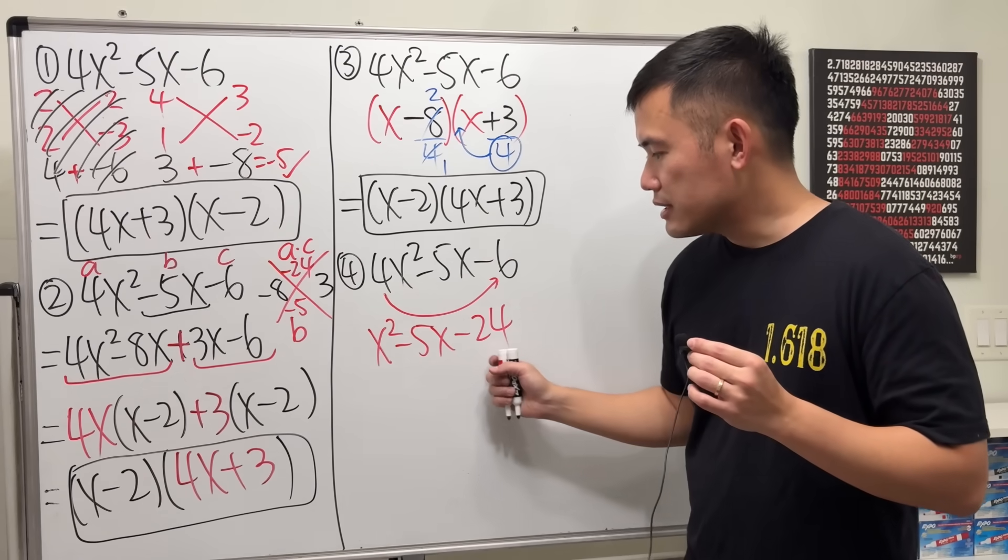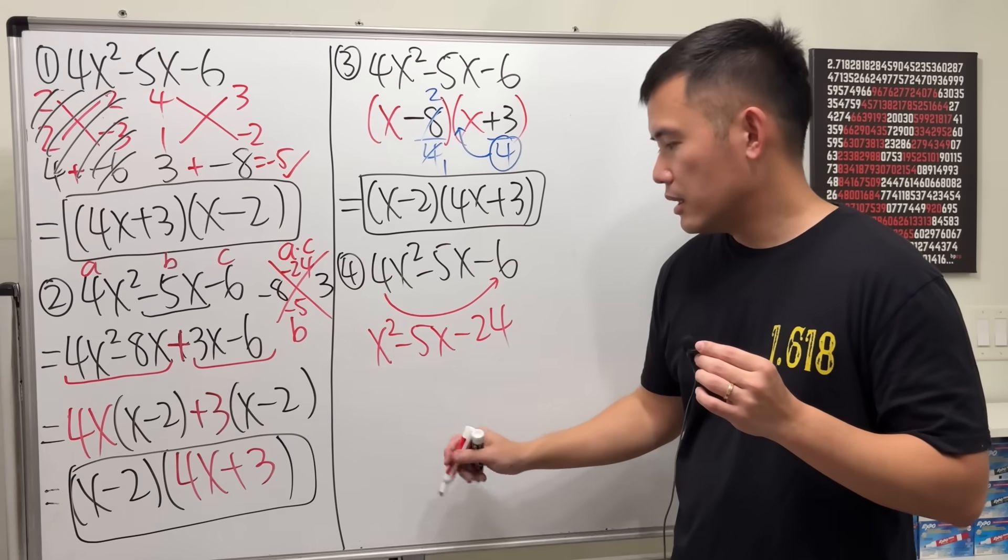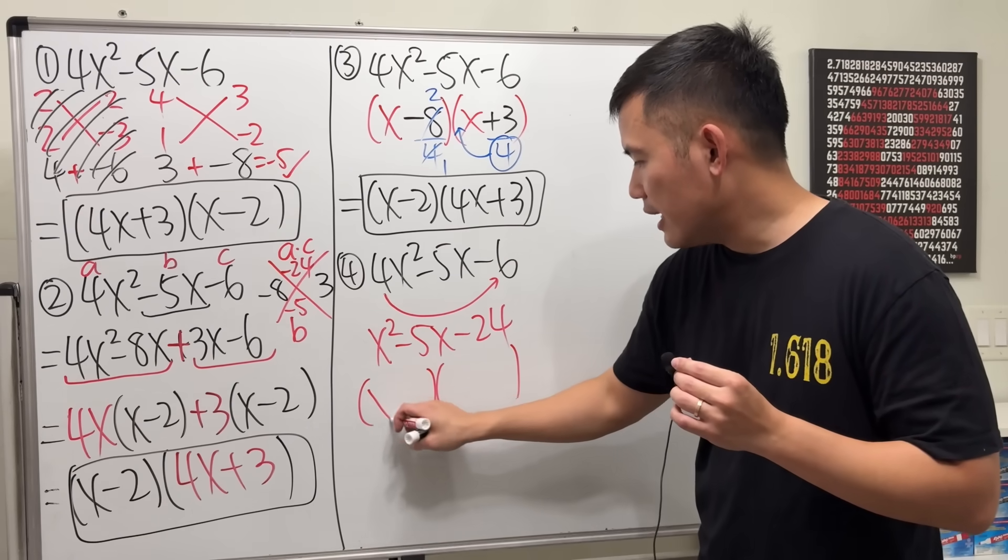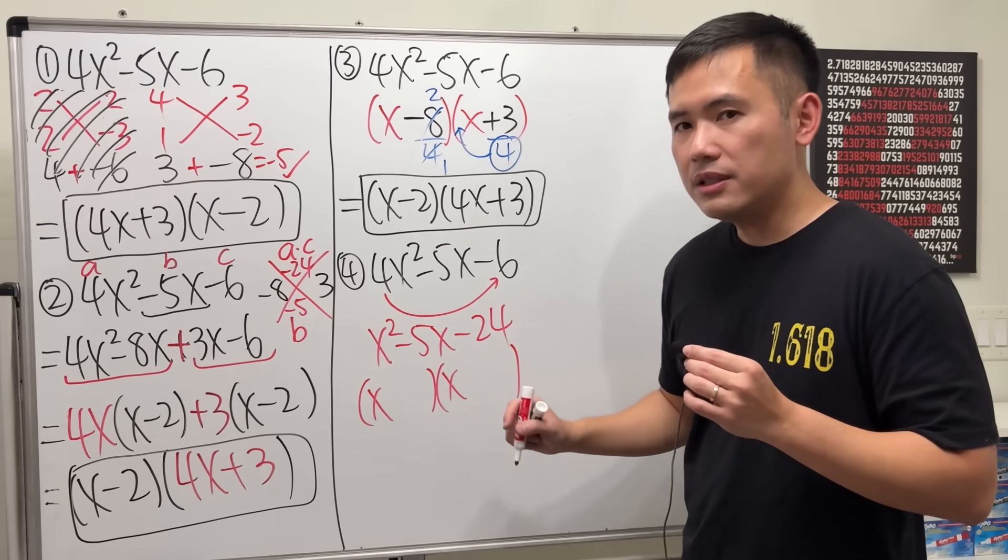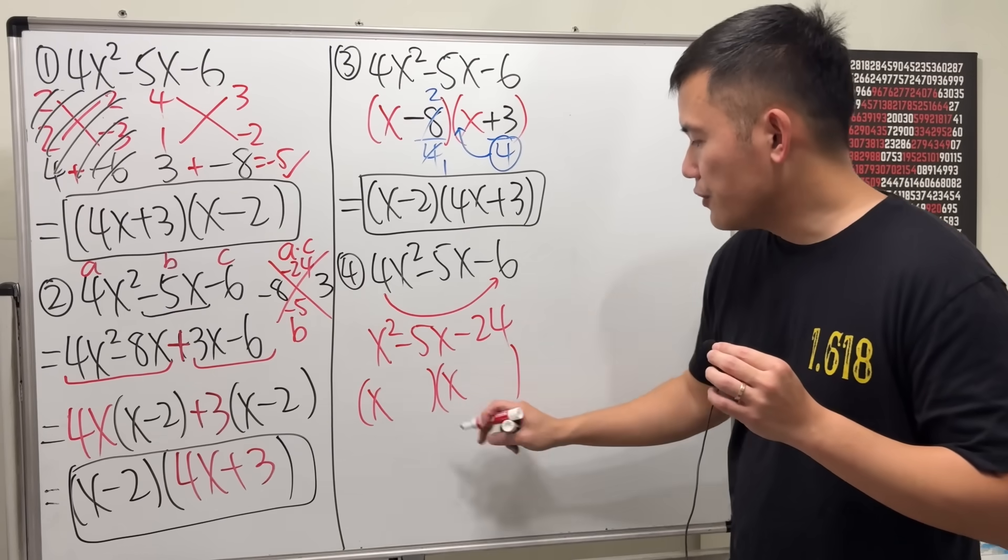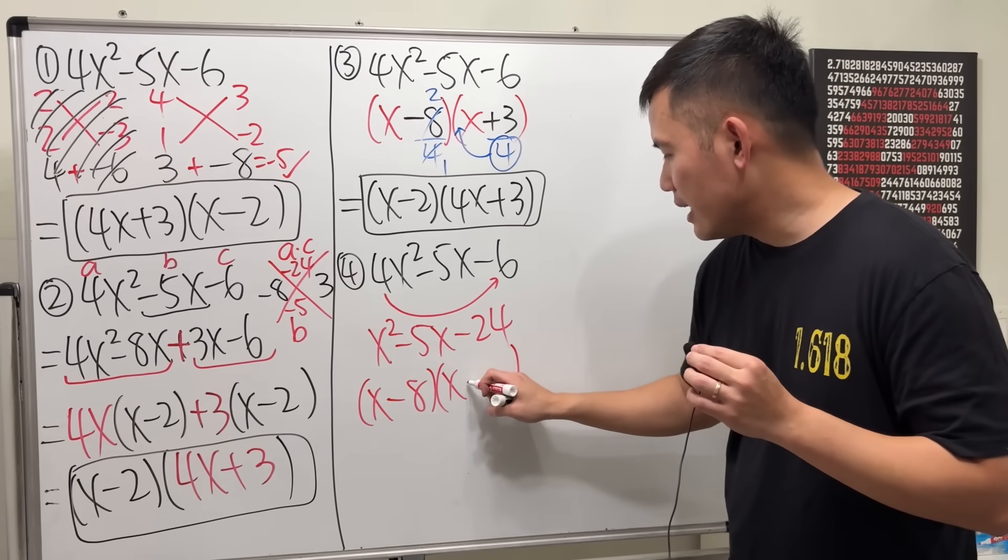Now, this right here is much easier to factor compared to that, right? So, let's go ahead and factor it. We just need x and x to get x squared. To get negative 24, we need negative 8 and positive 3.